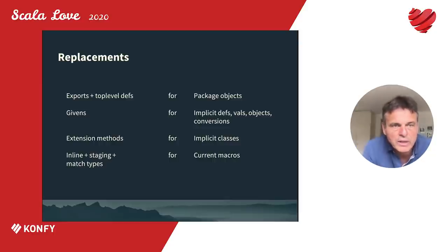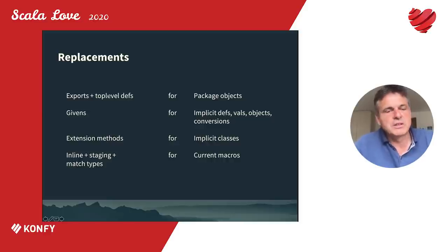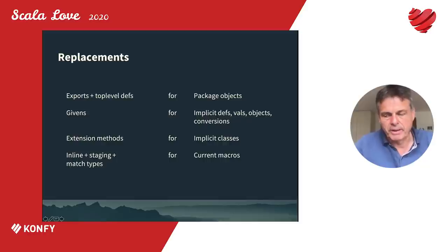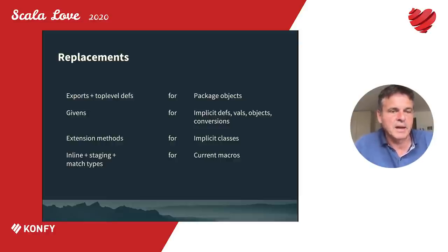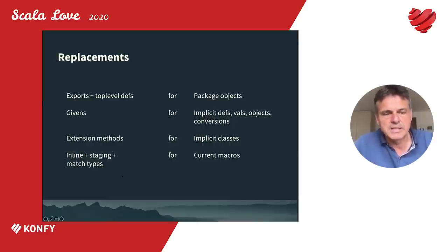Scala 3 also phases out old concepts superseded by better ones. Package objects are replaced by top-level definitions; package object inheritance is replaced by exports. The entire implicit system is replaced by a new abstraction called givens. Implicit classes are replaced by specialized syntax for extension methods. And the current macro system is replaced by a new metaprogramming system based on inline, staging, and match types.